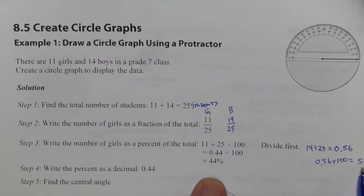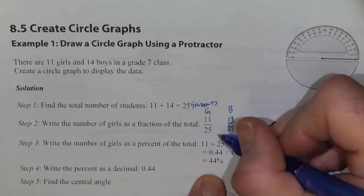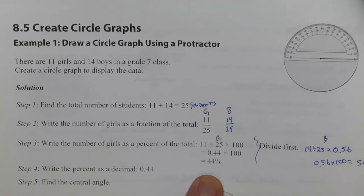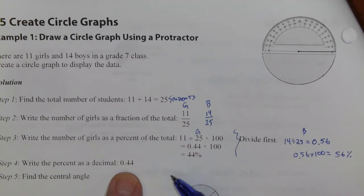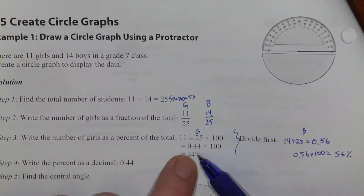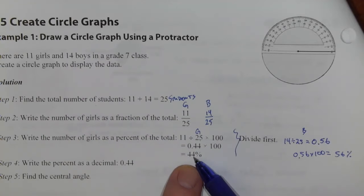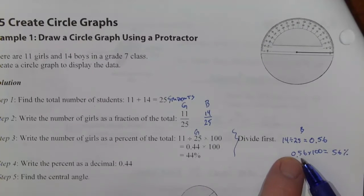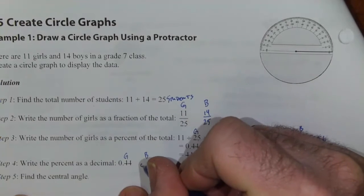So 56 percent boys, 44 percent girls. Write the percent as a decimal. Well actually we've already done that in the second last step up above. 44 percent is 0.44, so 56 percent is 0.56.